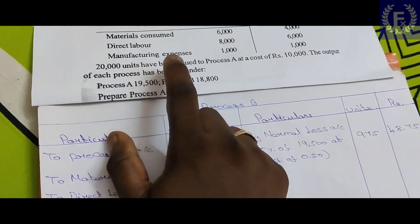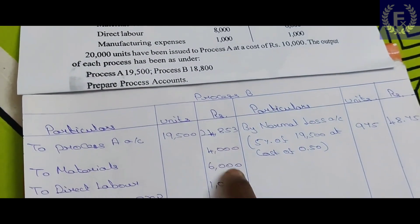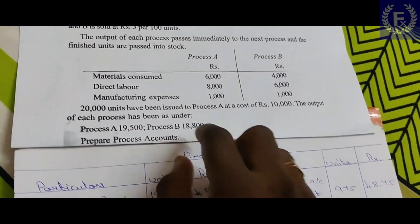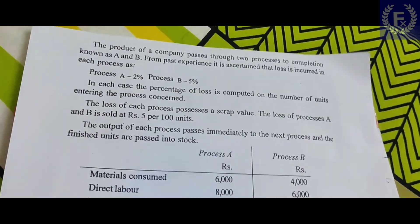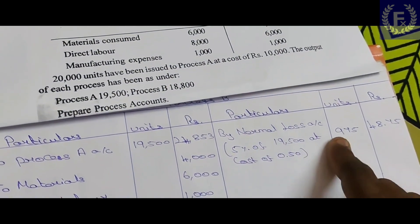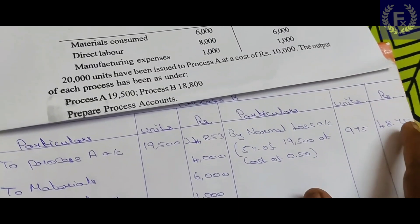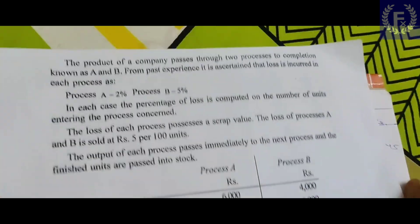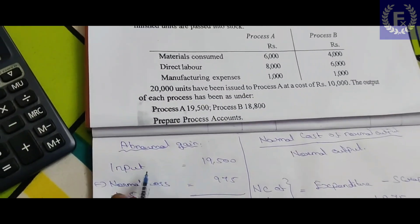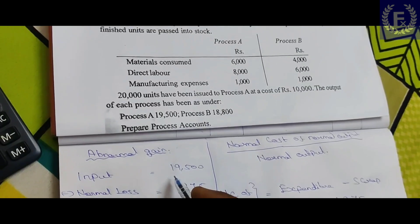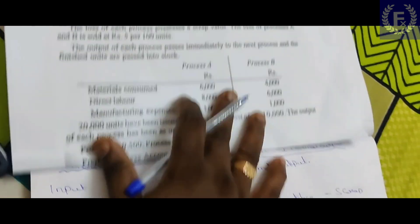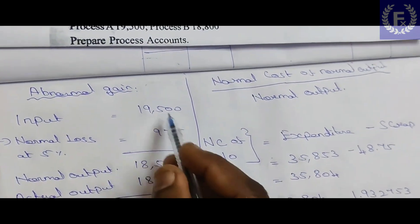The amount of material, labor, and manufacturing expenses is transferred from Process A to Process B. In Process B, normal loss is 5% of the input of 19,500 units. So, normal loss = 19,500 × 5% = 975 units. The scrap value of 975 units = 975 × 5/100 = 48.75.